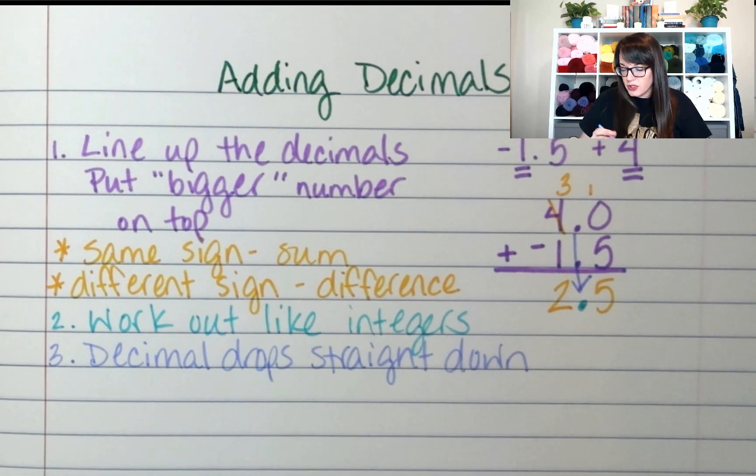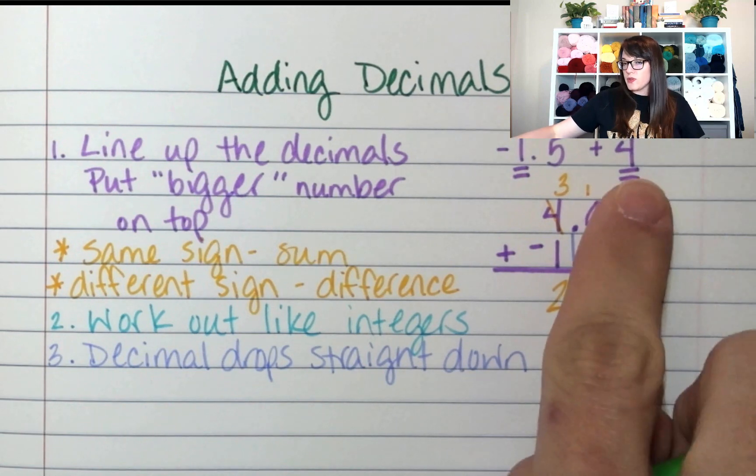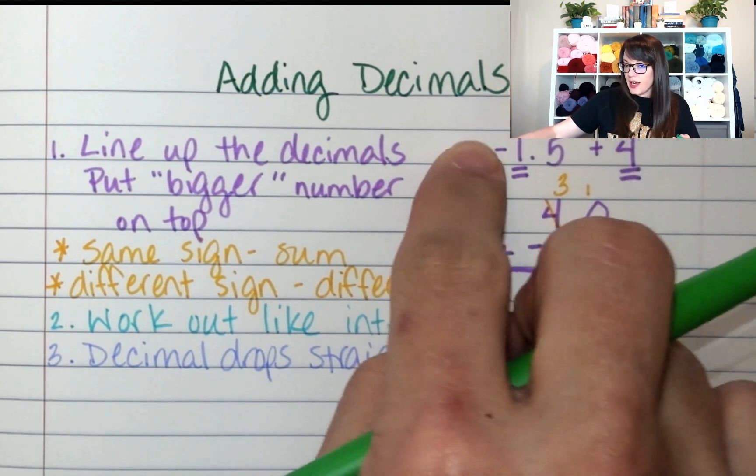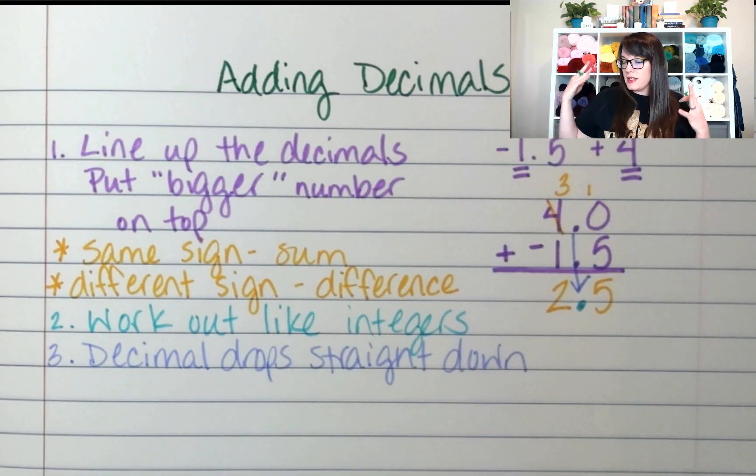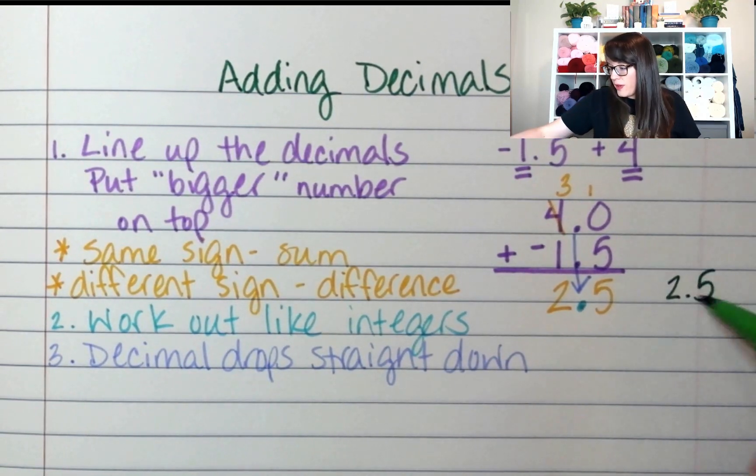At the end, I always like to double check. Let's just make sure I have the right sign. So this was positive 4 and this was negative 1.5. Did the positive team keep its sign? Yes. This stayed 2.5.